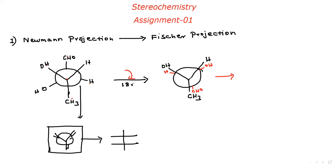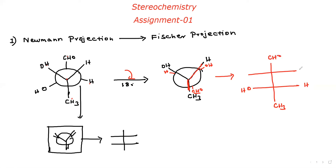It is very simple. This carbon, this carbon, this CH3, this carbon — CH3. Right side H, left side H. In the CH3: top, CH3, right side H, left side H. Whenever they give a Newman projection, you first have to convert to this standard form, then convert to Fischer projection.